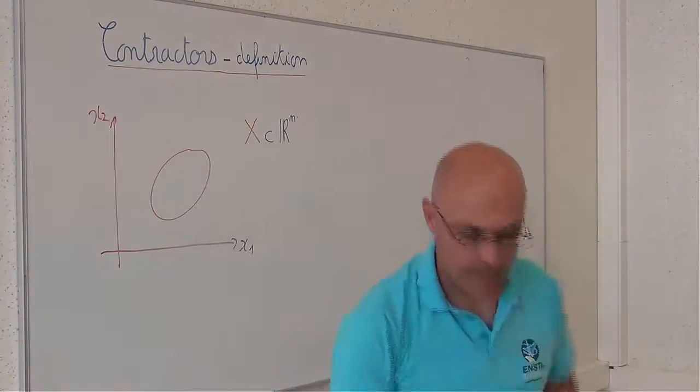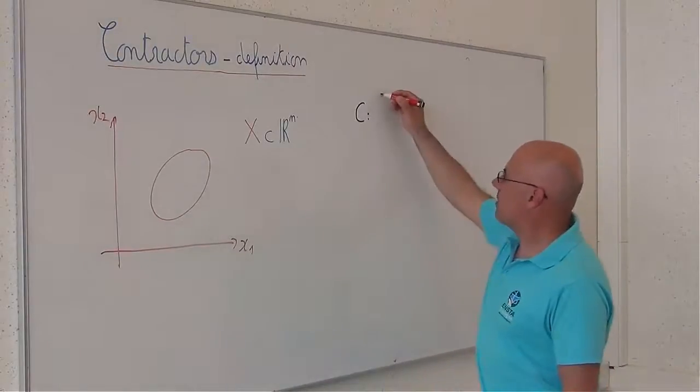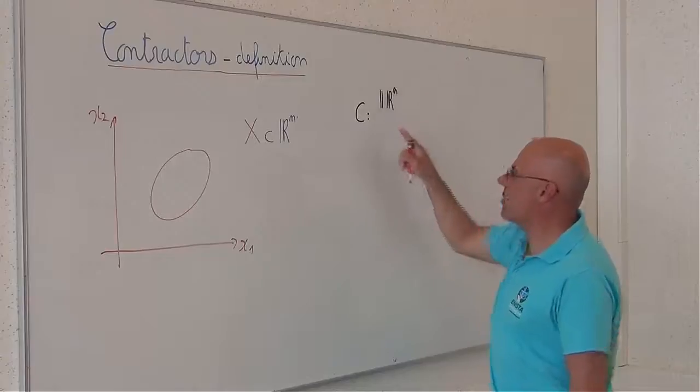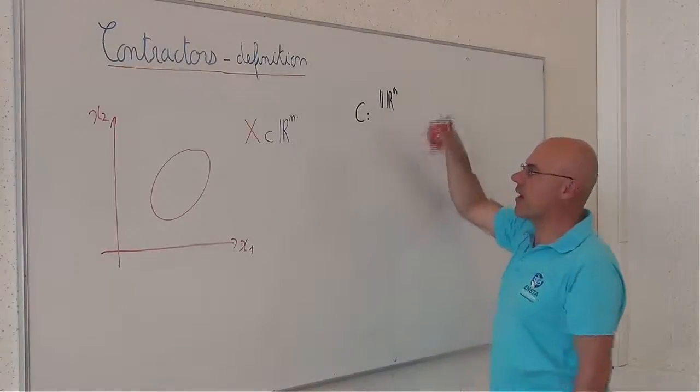A Contractor C is an element from IR^n. Recall that IR^n is a set of all boxes of R^n.